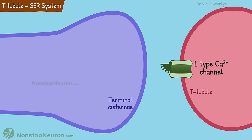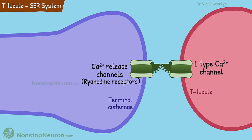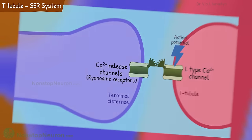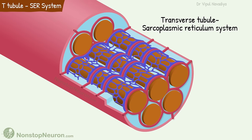Here the T-tubule membrane contains L-type calcium channels, and the terminal cisternae contain calcium release channels — also known as ryanodine receptors. Both these channels make physical contact. The action potential traveling along the T-tubule activates L-type calcium channels. Opening of these channels physically opens the calcium release channels also. This, along with the entire arrangement of the T-tubule–sarcoplasmic reticulum system, plays a very important role in excitation-contraction coupling.